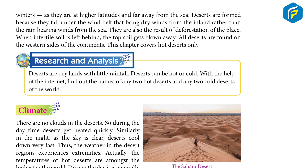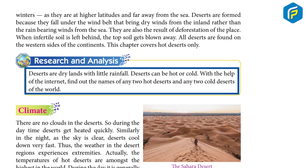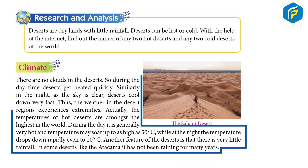Research and Analysis: Deserts are dry land with little rainfall. Deserts can be hot or cold. With the help of the internet, find out the names of any two hot deserts and any two cold deserts of the world.